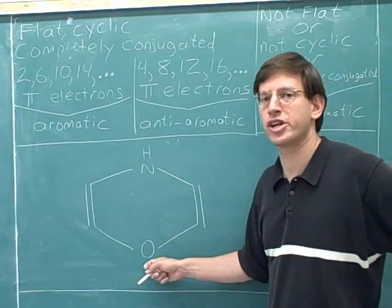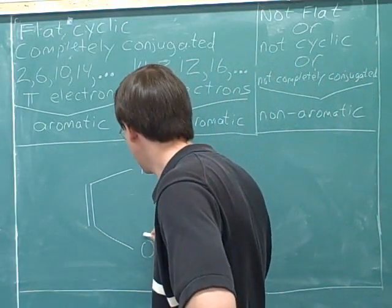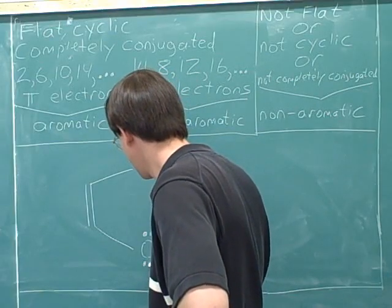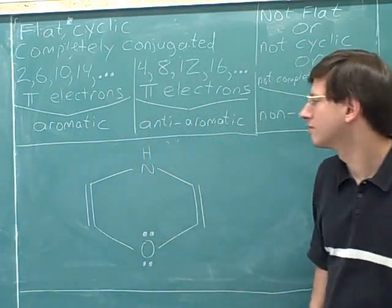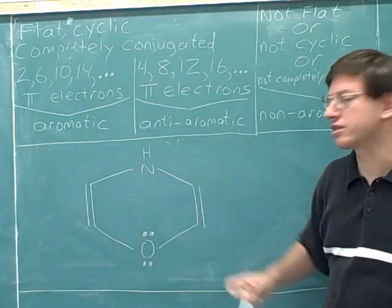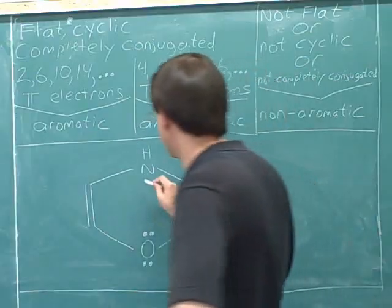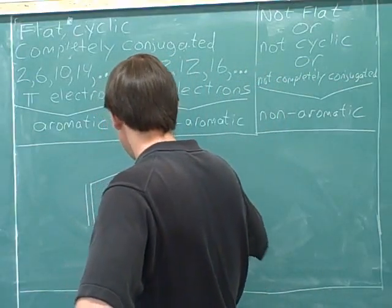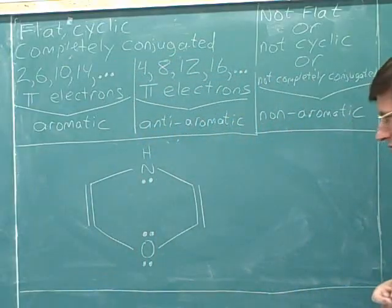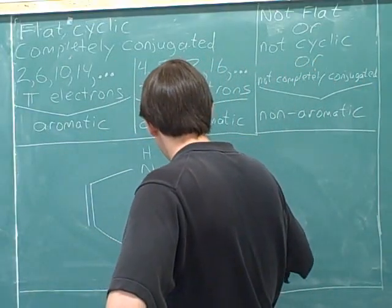The oxygen has no formal charge, so it has two lone pairs. The nitrogen has no formal charge, so it has one lone pair. Each of the pi bonds has two pi electrons.